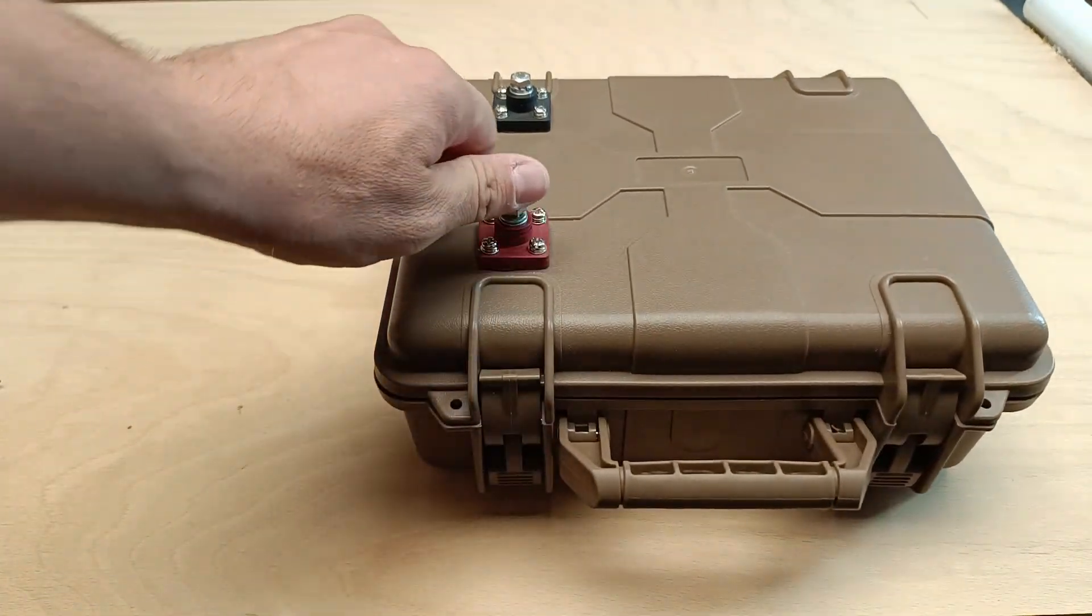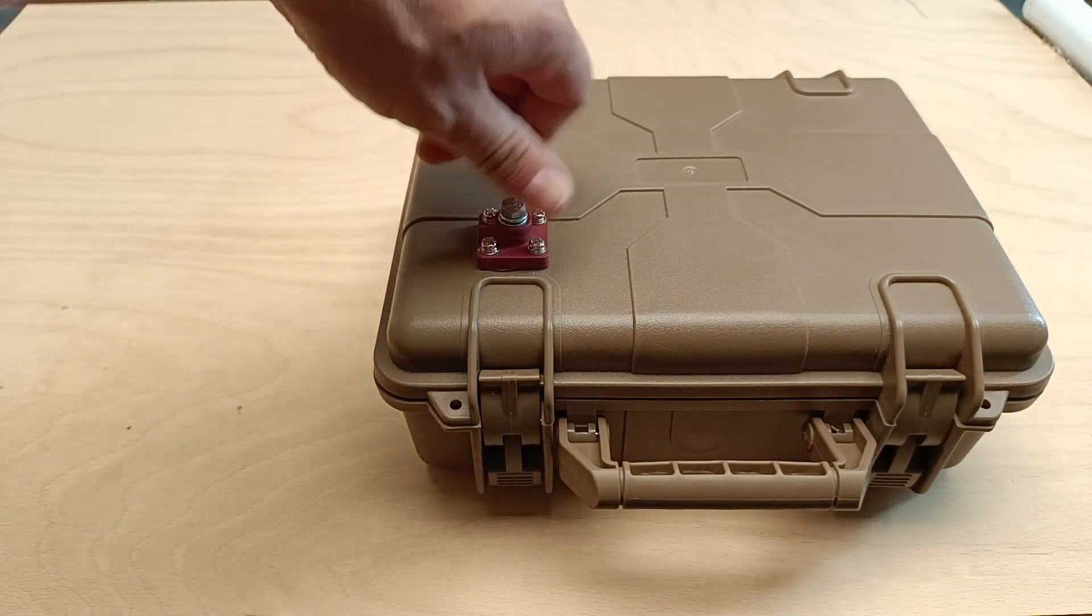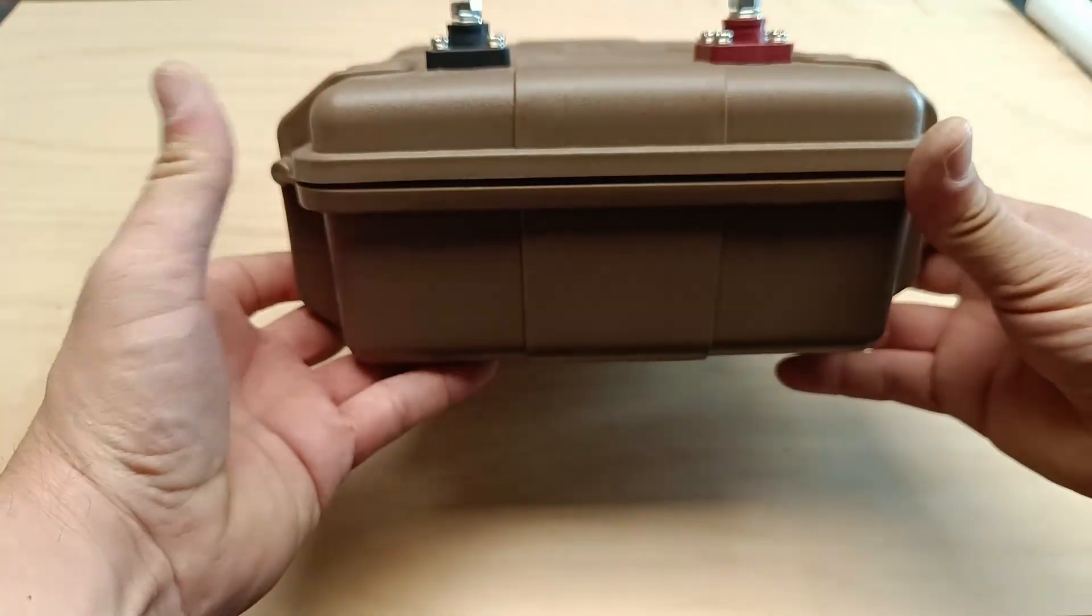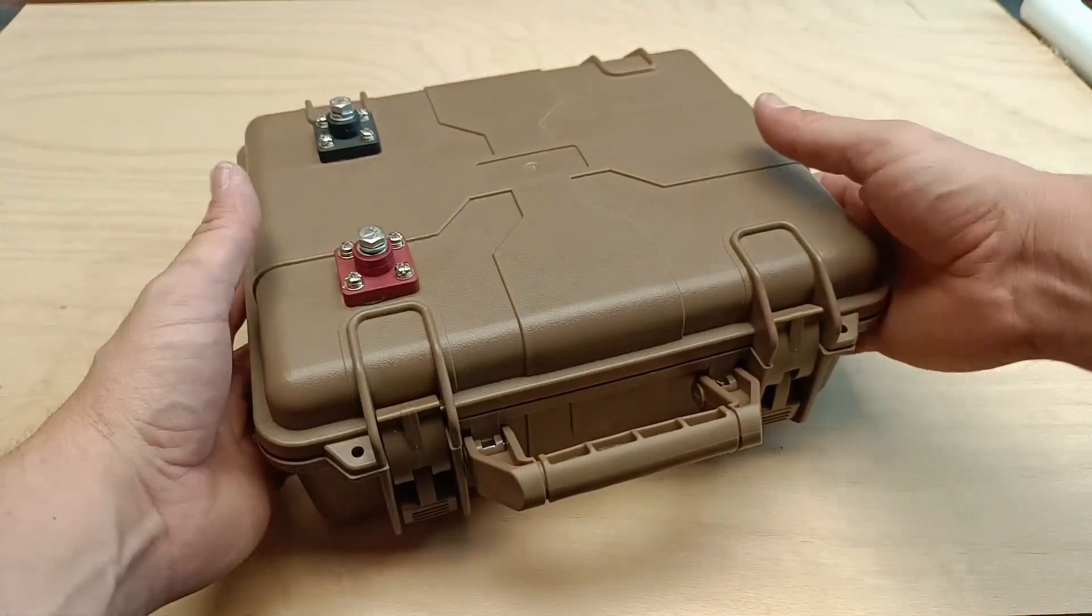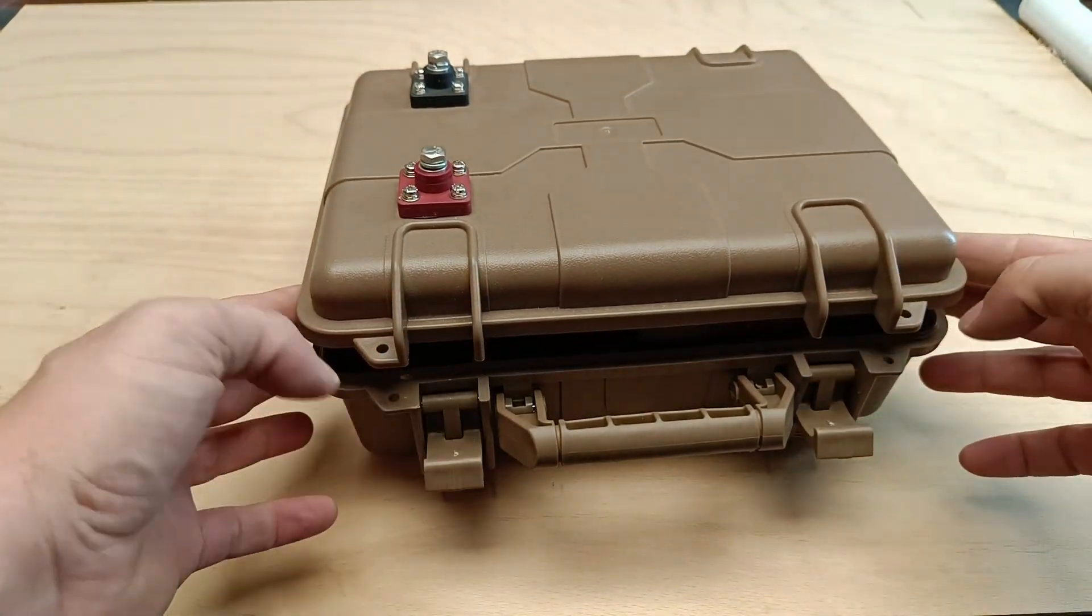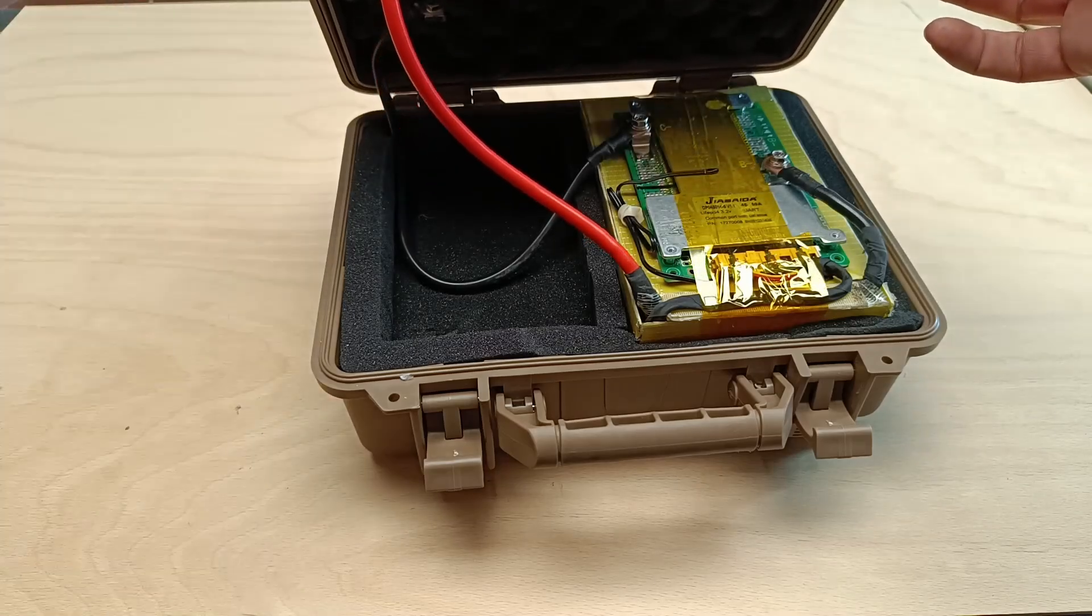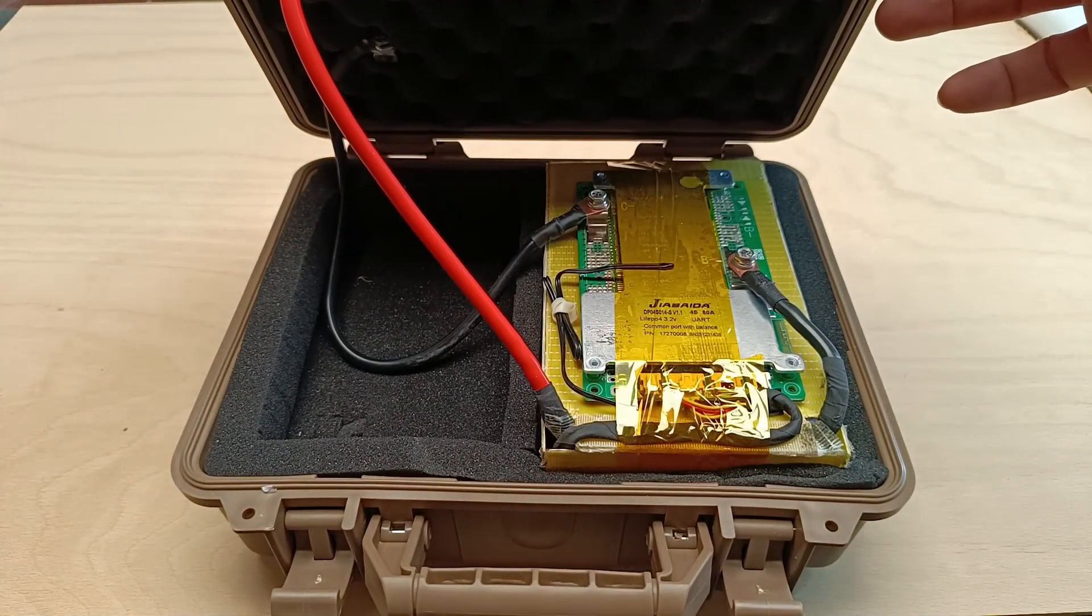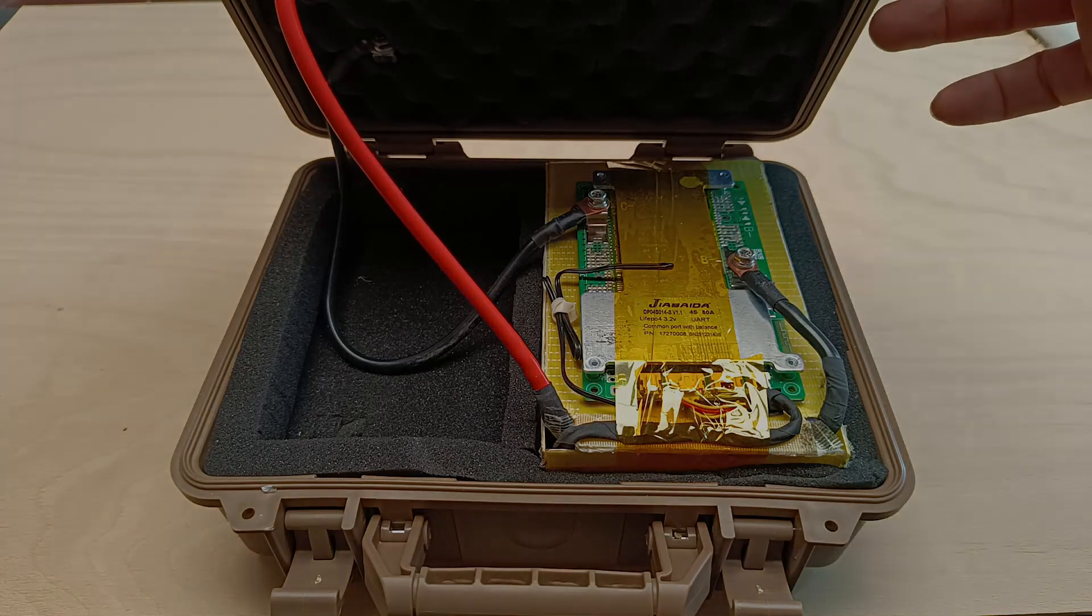And that's it. With this 12.8 volt 30 amp hour lithium iron phosphate battery and the Geobyta 50 amp battery management system, we now have a reliable and safe power source for a wide range of applications. Thanks for joining me in today's video. If you enjoyed it, don't forget to like, subscribe, and share your thoughts in the comments. See you next time.